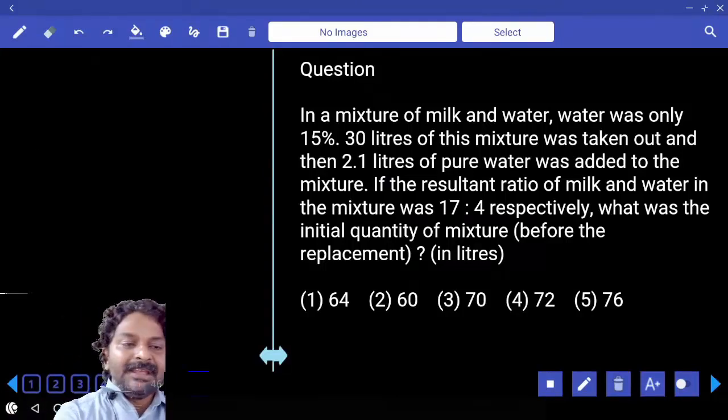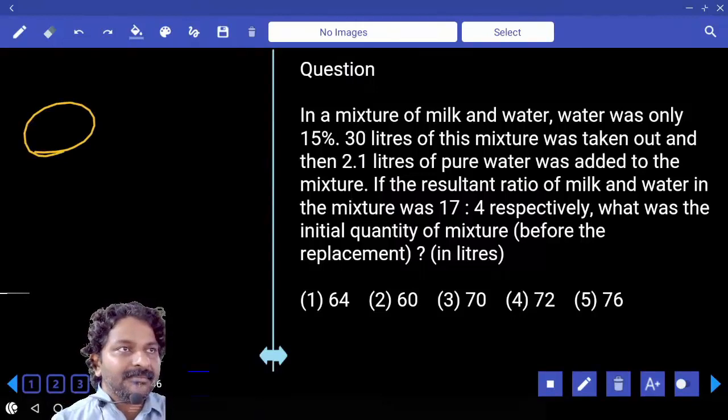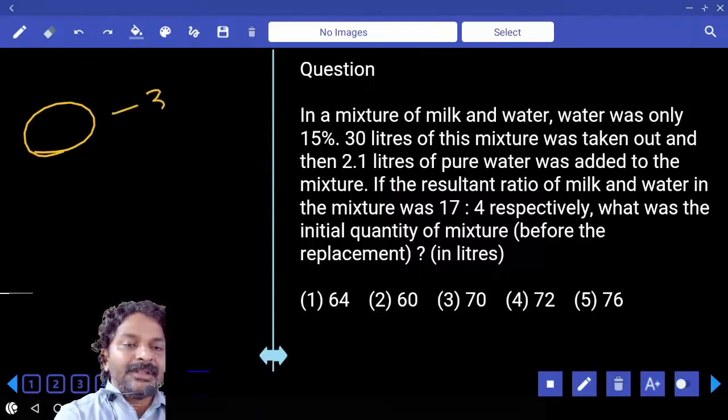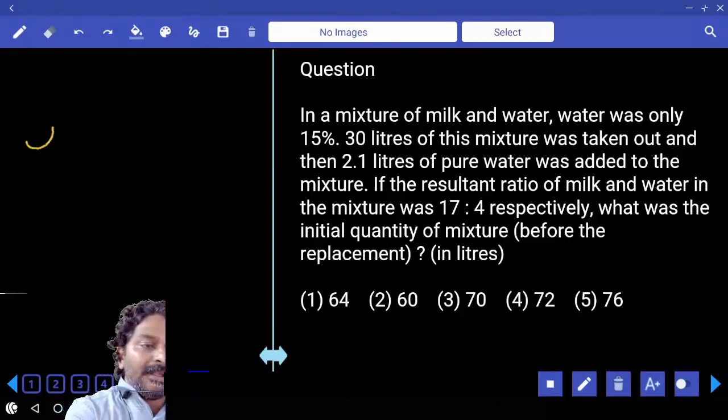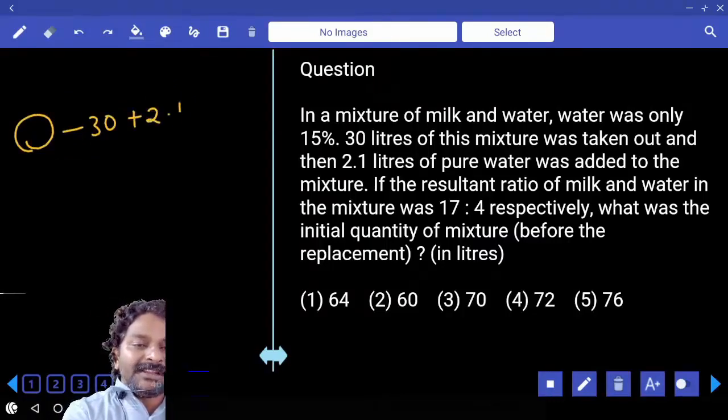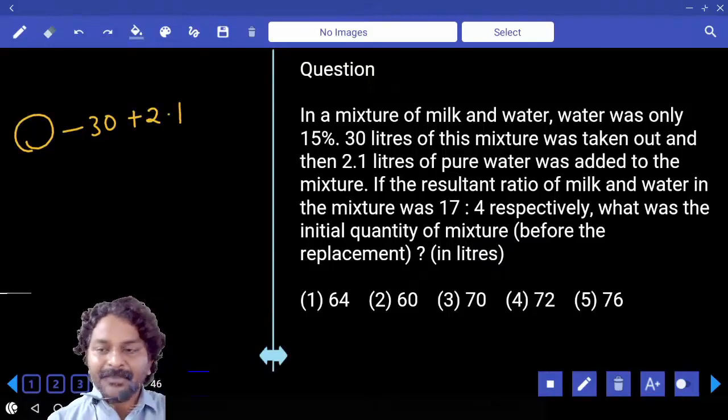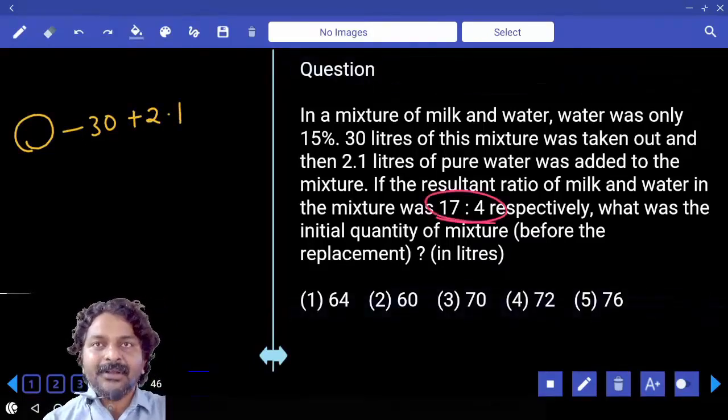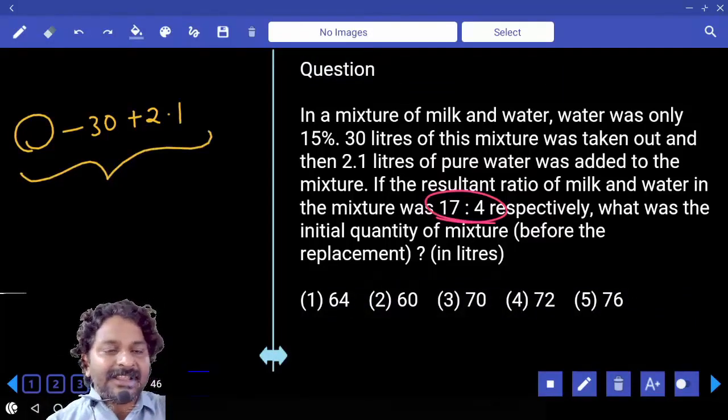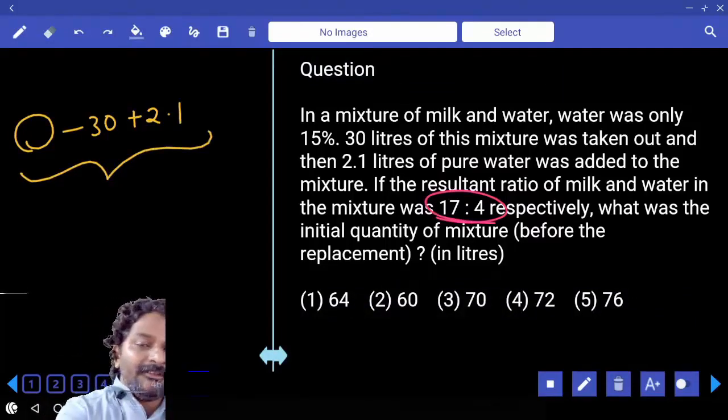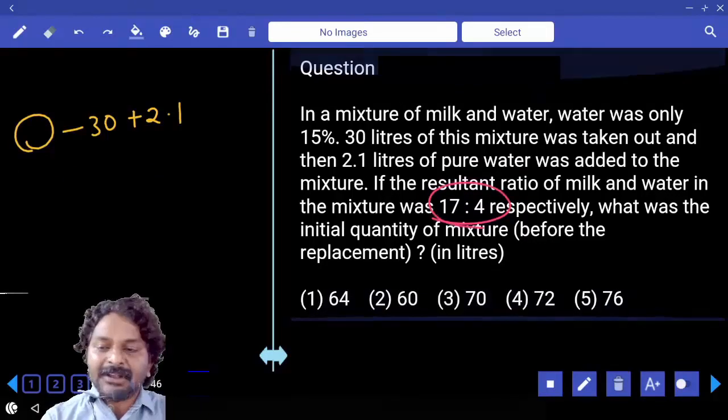Finally we have some quantity, from that 30 liters is taken out, again 2.1 liters of water added, finally ratio becomes 17 is to 4, total remaining quantity in final container is this much only, which in terms of number of parts is equal to...